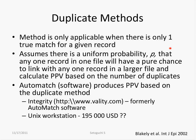A third method is the duplicate method, applicable when there is only one true match per record. It assumes uniform probability that any record in one file could by chance link to any record in a larger file and calculates PPV based on observed duplicates. The software Auto-Match implements this procedure, though it appears to have changed names and may be expensive. We did not pursue this method but references are provided.